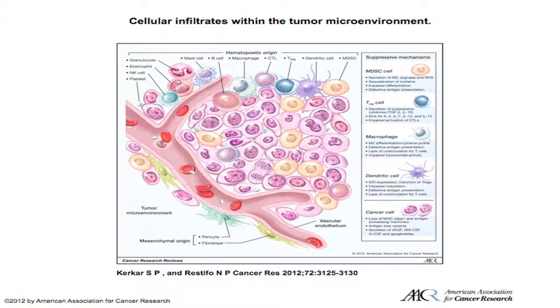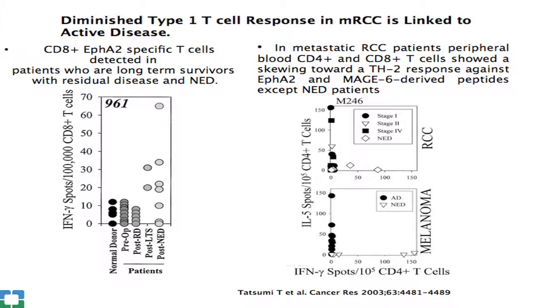We are now looking at interactions involving PD-1 and PD-L1. In kidney cancer patients and melanomas, there is a decrease in the type 1 gamma interferon response linked to active disease. A CD8 T cell response was only seen in patients with no evidence of disease or in long-term survivors. These cells are skewed toward a type 2 response, making immunosuppressive molecules like IL-5 and IL-4 rather than gamma interferon.